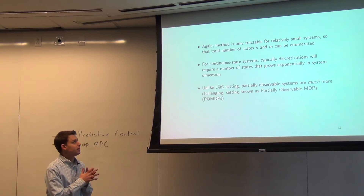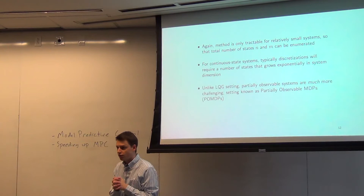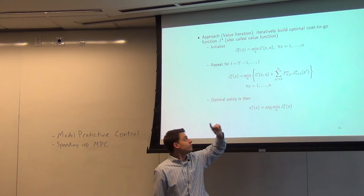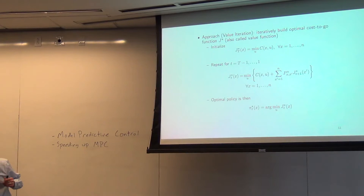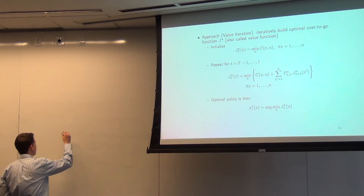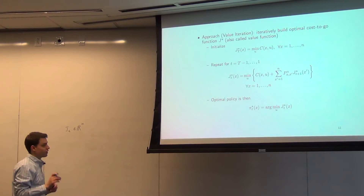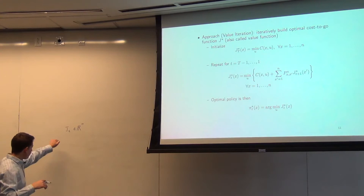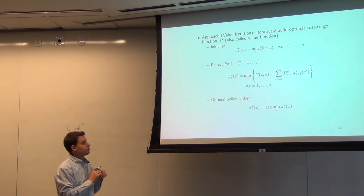A few quick comments on MDPs: they're really only going to be tractable for a relatively small number of states and actions. When you compute value iteration, you have to store a vector J_t, which is the value function for time t. J_t is itself a vector in R^n, where for each state it stores the value of being in that state—the cost you'll incur if you start there and then do the best thing going forward.